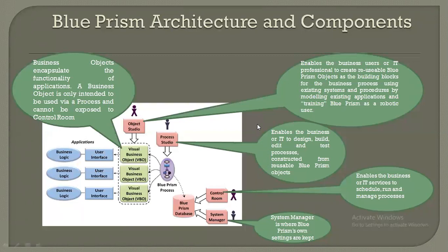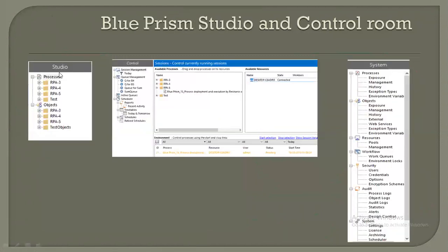In Blue Prism's UI, the Studio contains processes and objects. The Control Room handles session management, queue management, and schedules. Resources here are the bots, and you can see policies applied, processes added, and in the System section you can manage users, workers, and license-related things.